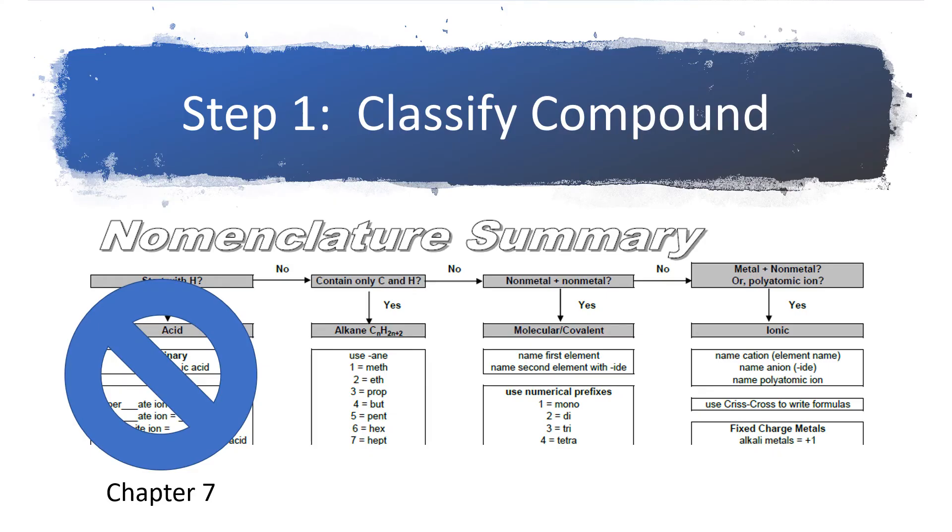This chart, the nomenclature summary, can be used to classify compounds so that we apply the correct set of nomenclature rules to them. Up at the top, that very first line in gray, it is going to ask you a question about the compound.